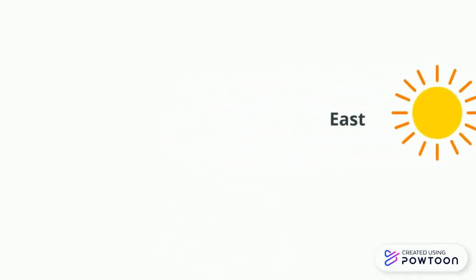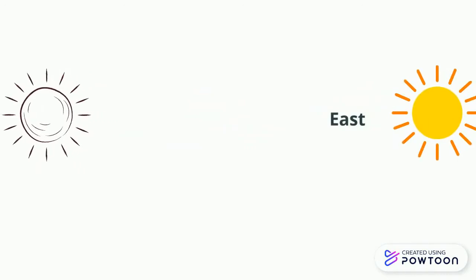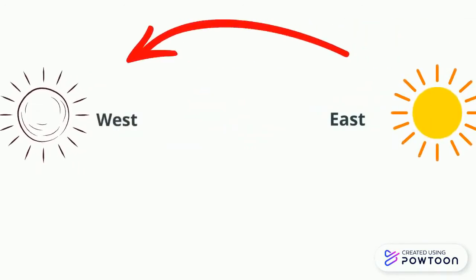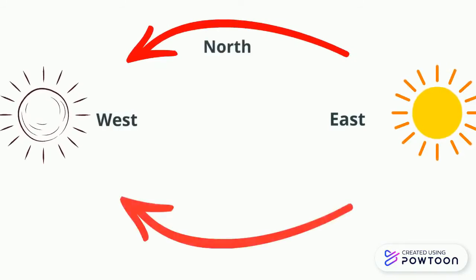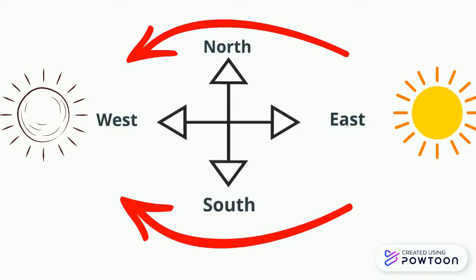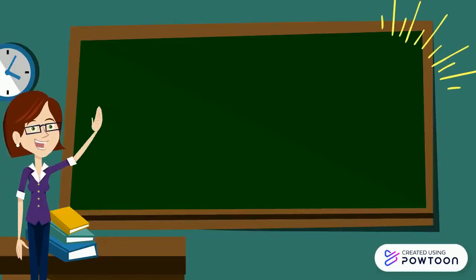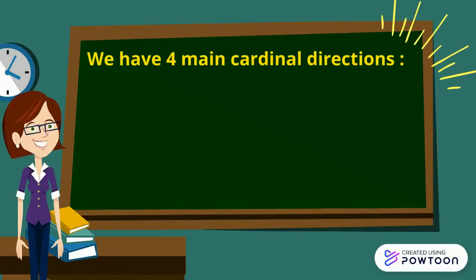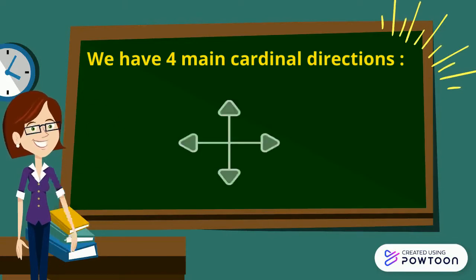So, the sun rises from the east and it sets from the west. The direction that is between east and west from above is called the north, and the direction that is between east and west from below is called south. Let's make a quick summary — we have four main cardinal directions.